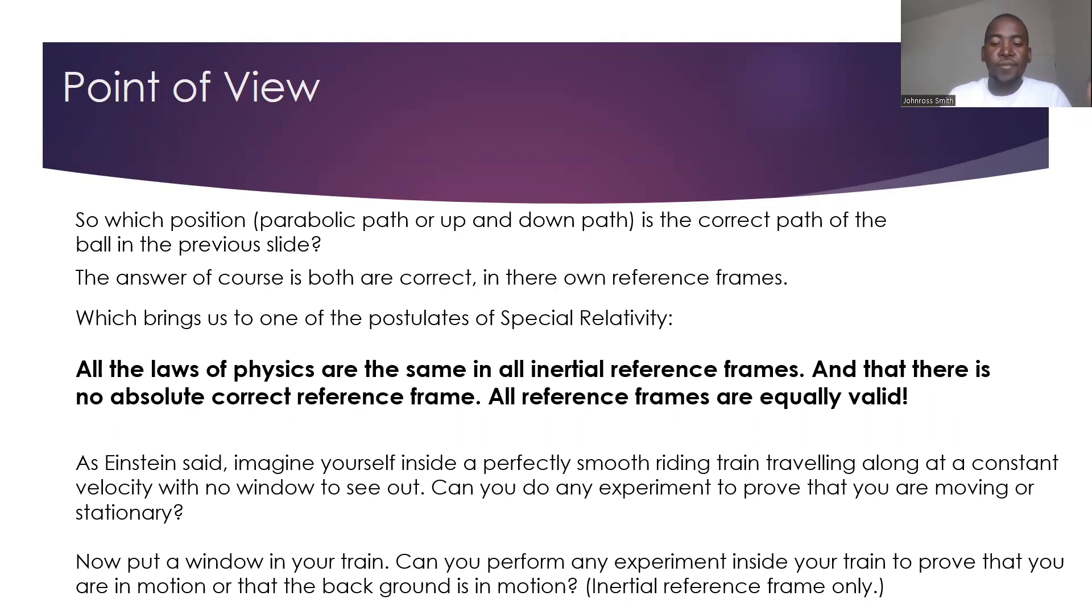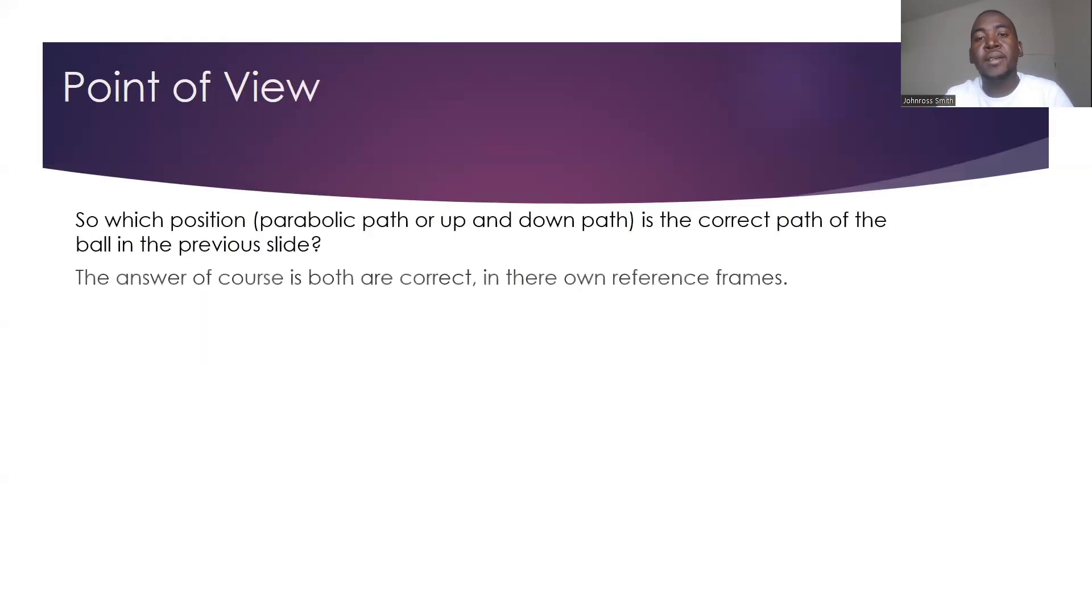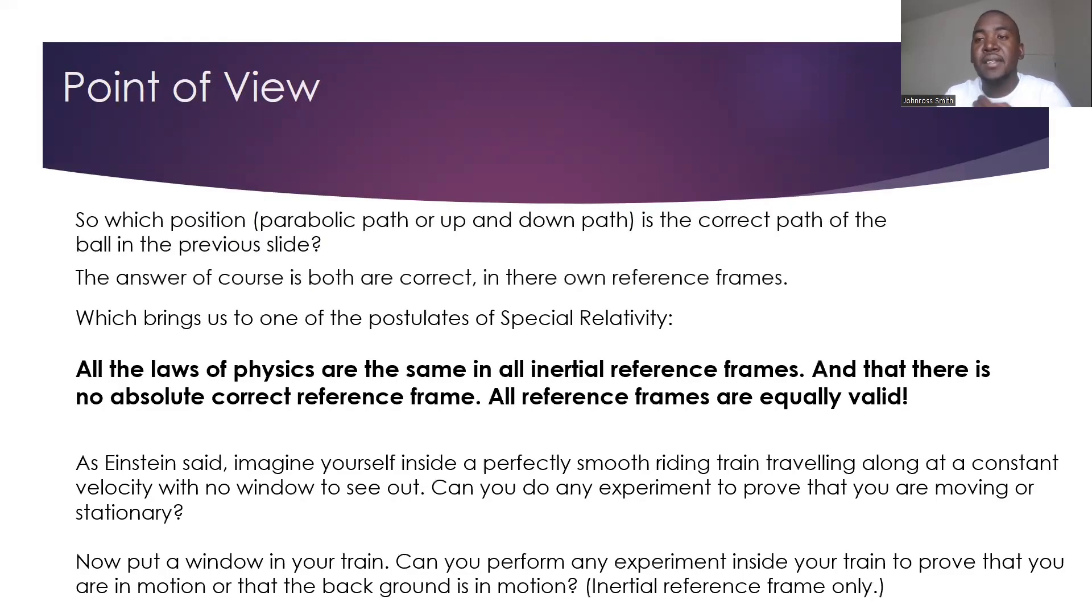So therefore, if I'm the person that was seeing this event happening in a parabolic motion, it is true for the same person that was seeing it in a vertical motion. So we do not make a reference frame invalid because of the observation that is seen.